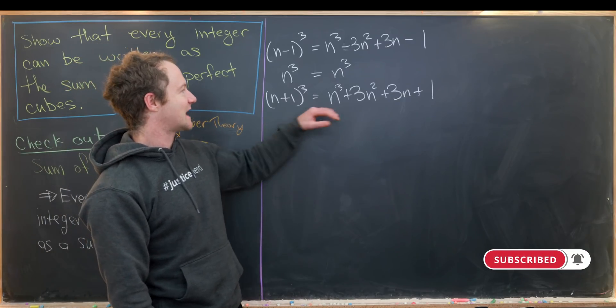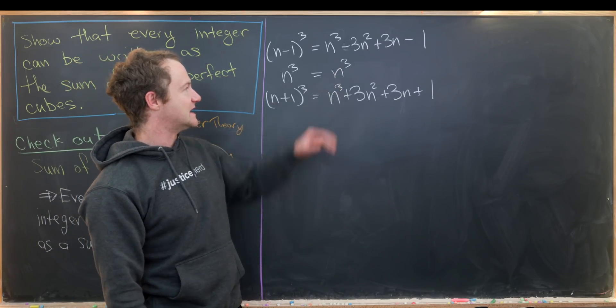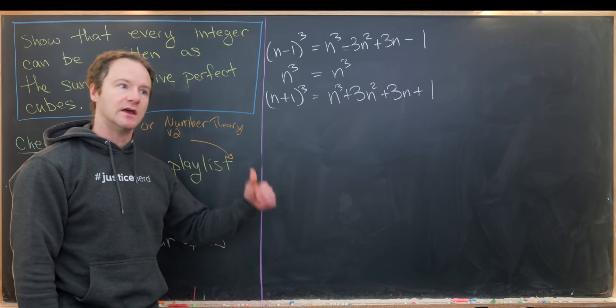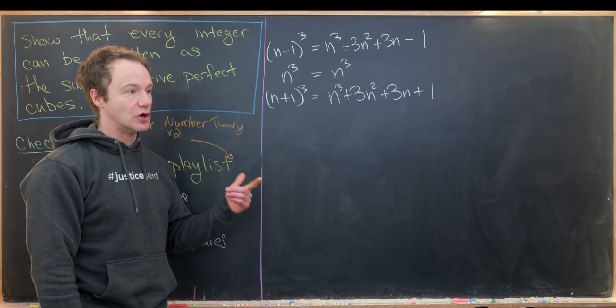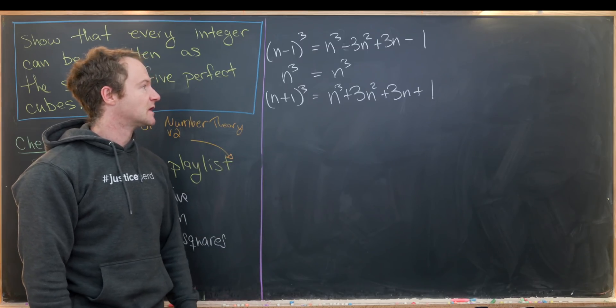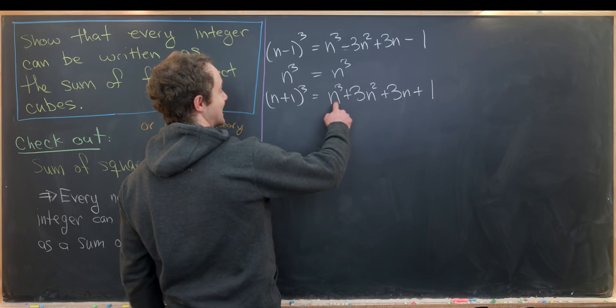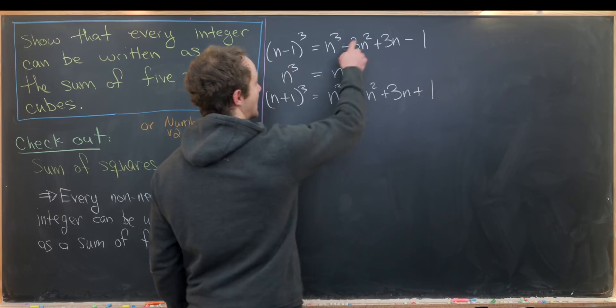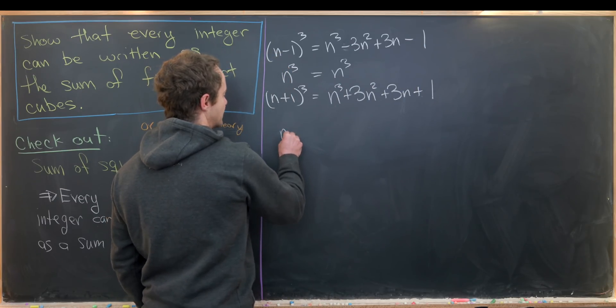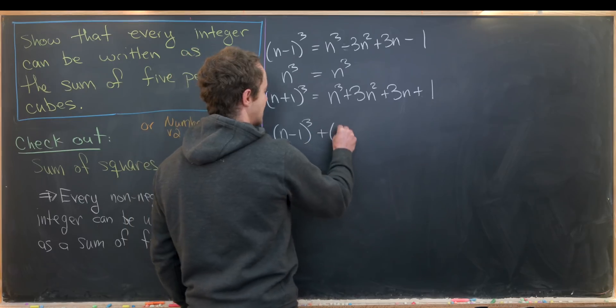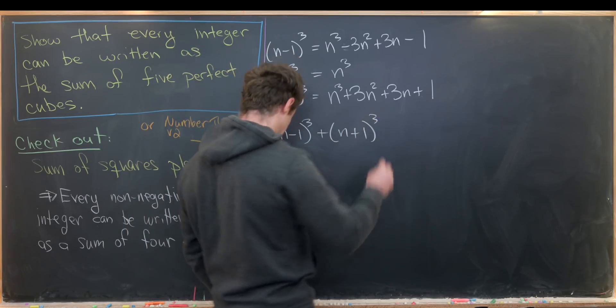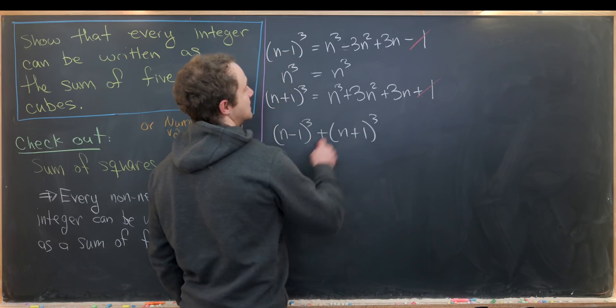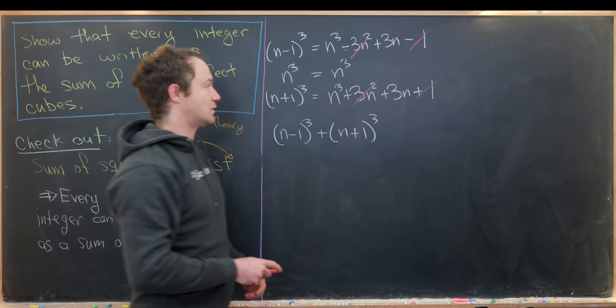Now the idea is, can we combine these types of objects to get something that just has a first power of n? So no n², no n³, and no constants. Notice that we could add the last one and the first one, and that'll cancel the constant as well as the square term. So we'll do (n-1)³ + (n+1)³. That's going to end up canceling these terms when we add those together.